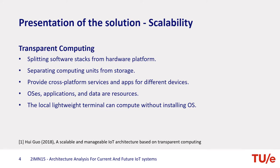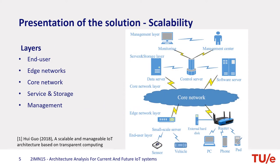Different operating systems, applications, and data are all resources in transparent computing. The local lightweight terminal can compute without any operating systems. There are five different layers in transparent computing architecture. The end-user layer consists of various IoT devices such as PCs, phones, and sensors. These IoT devices can be viewed as clients in the architecture and install resident software like a Meta Operating System to support core platform and dynamic service execution.